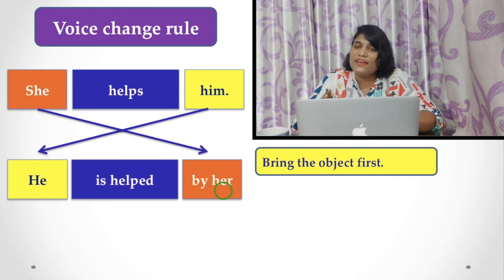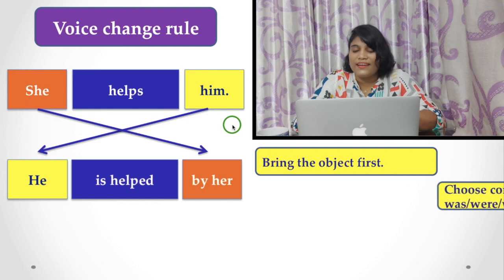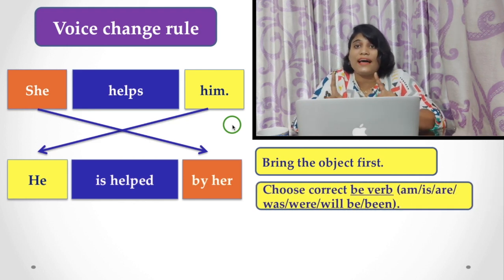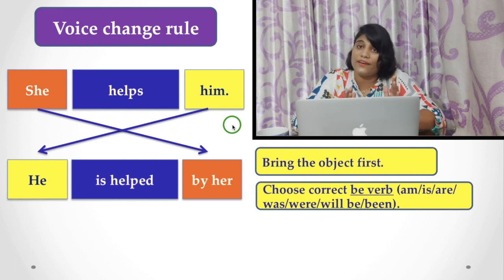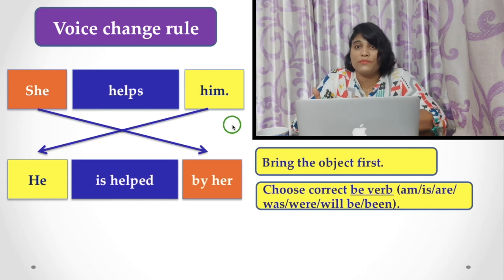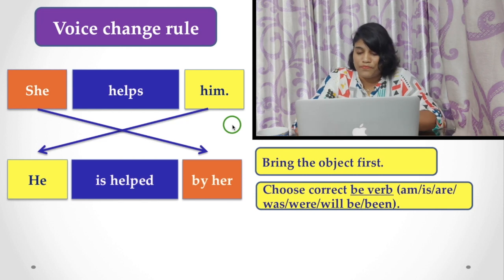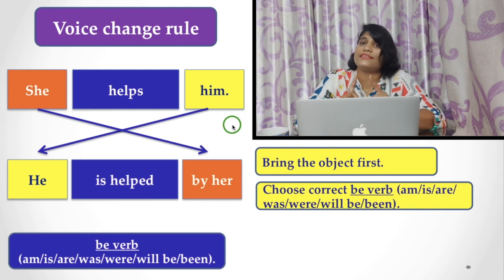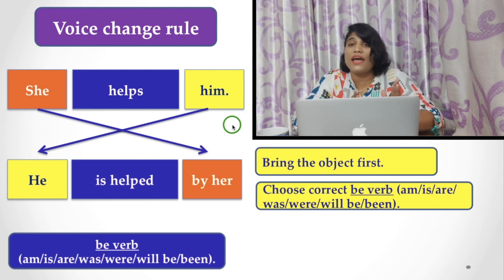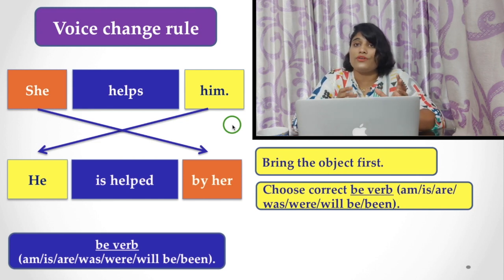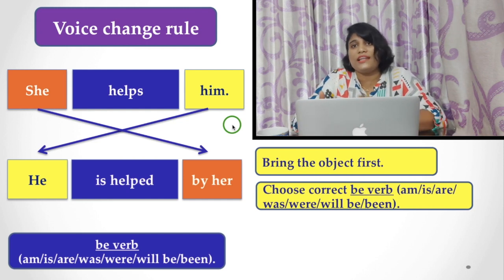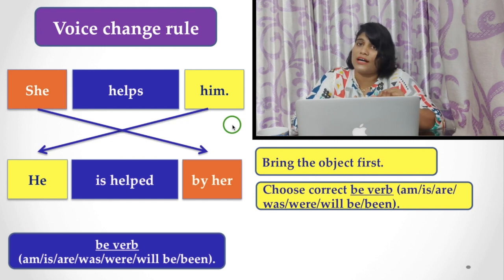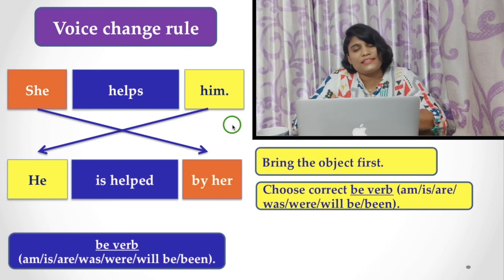Let's summarize the rules. First, bring the object to the front — 'him' becomes 'he.' Then, choose the correct be-verb: for present tense, use 'am,' 'is,' or 'are'; for past tense, use 'was' or 'were'; for future, use 'will be.' 'Been' is also used in some cases. You must notice whether the sentence is in present, past, or future tense, and check the number of the subject — singular uses 'is'/'was,' plural uses 'are'/'were.'